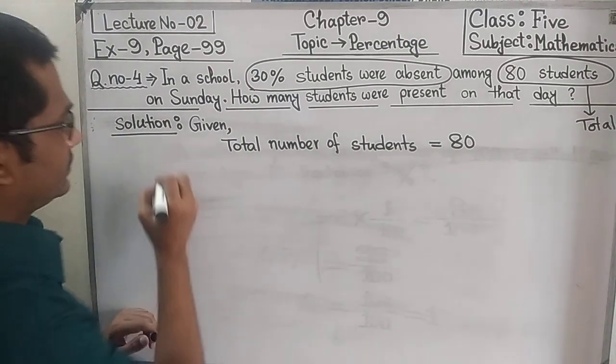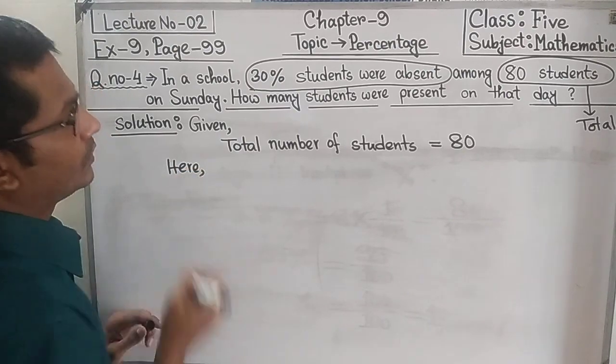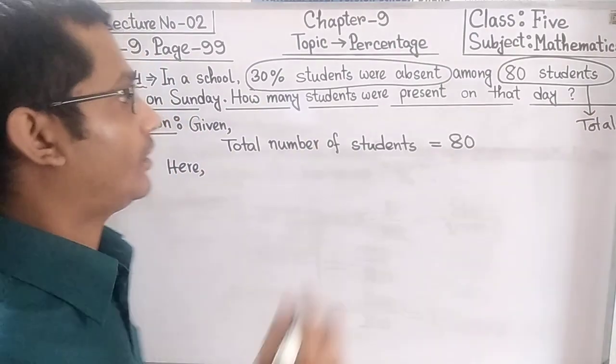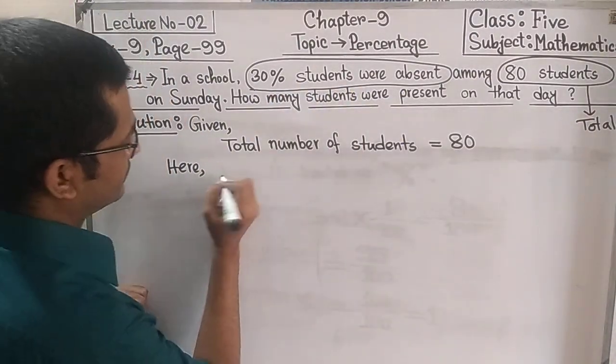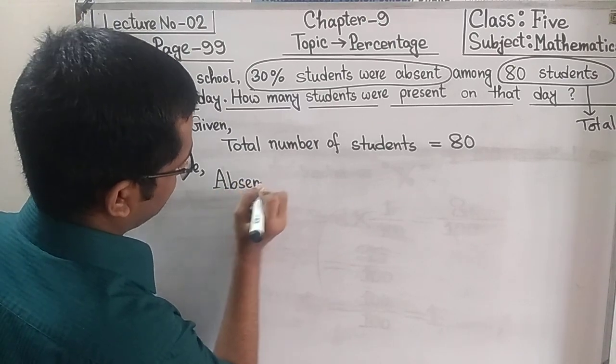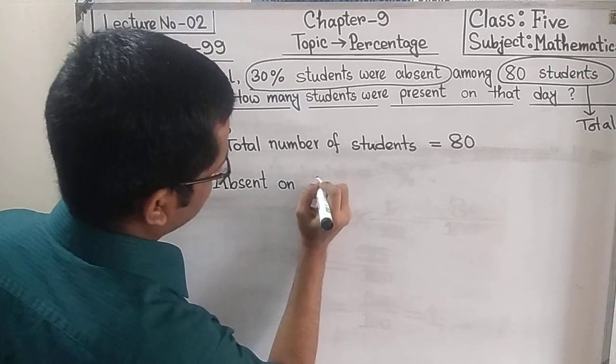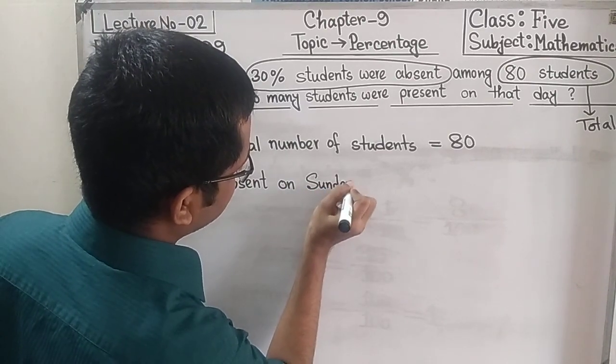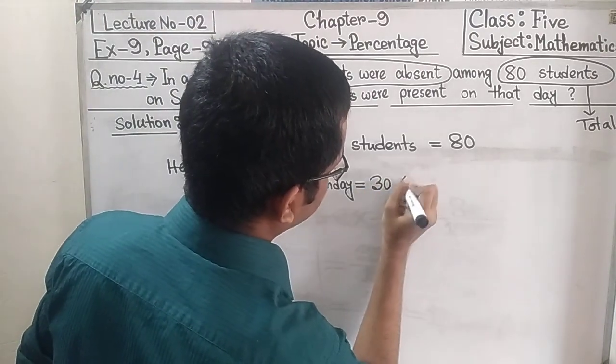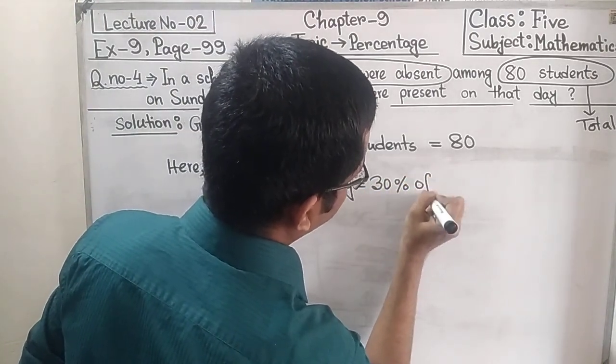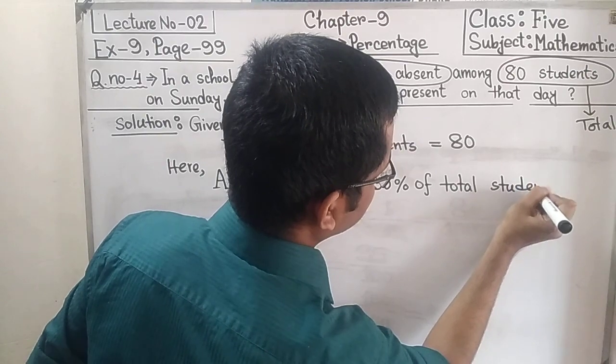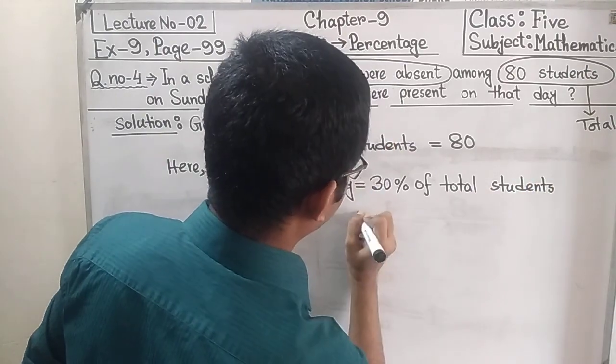So now we are going to find the actual number of absent students from this information. Absent on Sunday, that is 30 percent of total students.